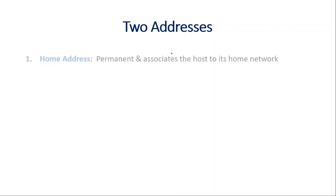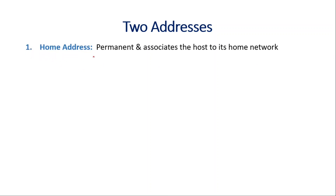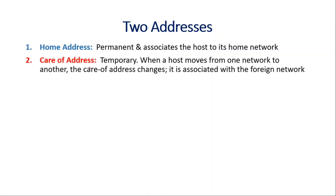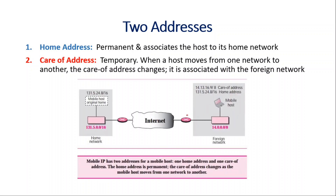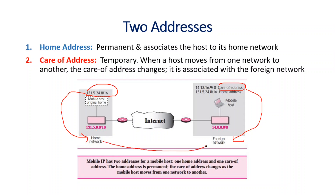In order to overcome these drawbacks, we can use two addresses. One is the home address, which is permanent and associates the host to its home network. The other is the care-of address, which is temporary and is associated with the foreign network. As you can see here, the home address is in the home network, and the care-of address is in the foreign network. Once the mobile host moves from the home network to the foreign network, it will have both addresses.